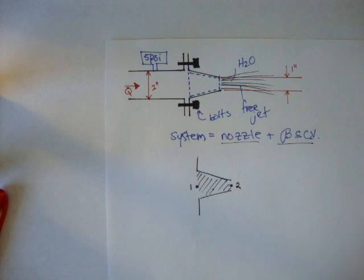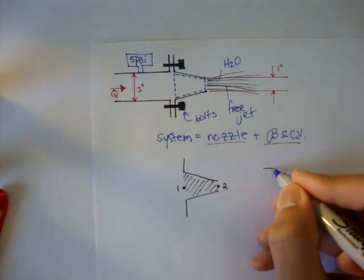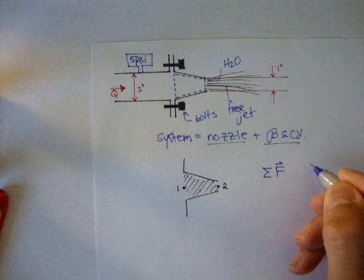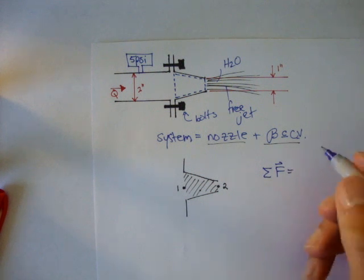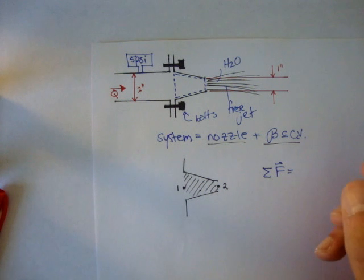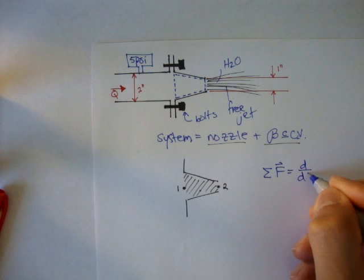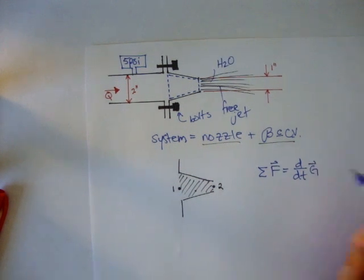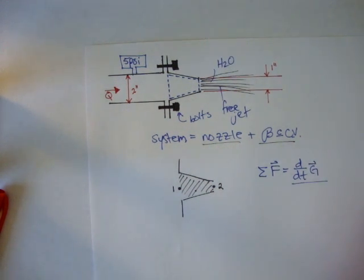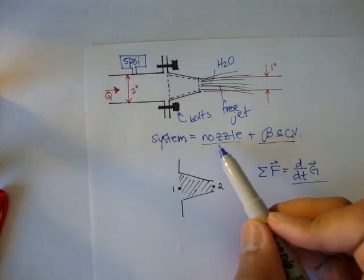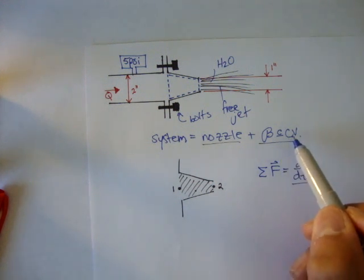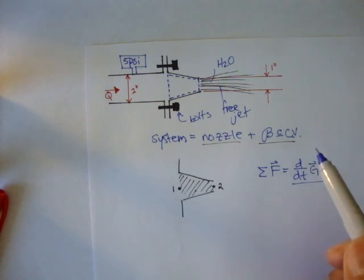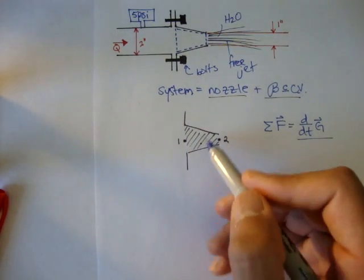So let's just, we know that the sum of all the forces is going to be equal to the momentum. Or if we derive momentum, we get ma. So this is kind of like saying our ma of the system. So our system is the nozzle and the body that's controlled inside the control volume. So let's draw a free body diagram of this.